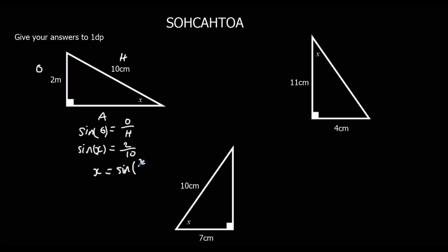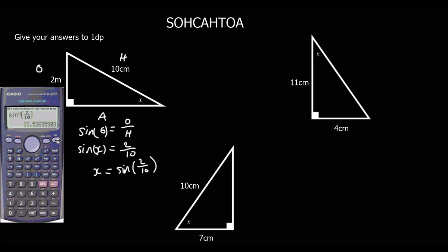So, shift sin, 2 over 10. That gives us 11.5 degrees. So, x is 11.5 degrees to 1 decimal place. In this question here.